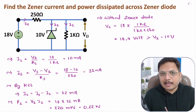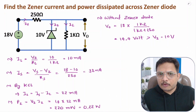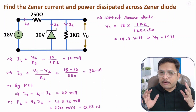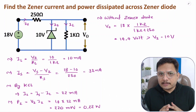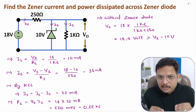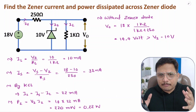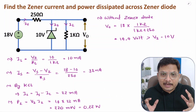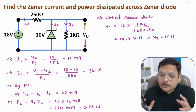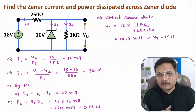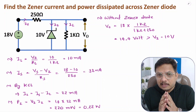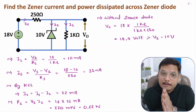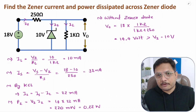That is how one can easily calculate different parameters of a Zener diode voltage regulator. In future videos, I will solve more examples based on Zener diode to give more clarity on how to solve problems. If you have anything to share, please note it down in the comment section. Thank you so much for watching.